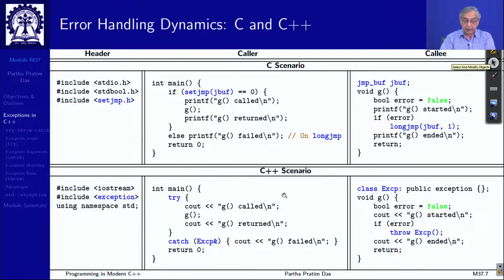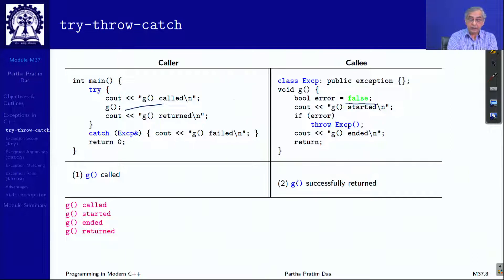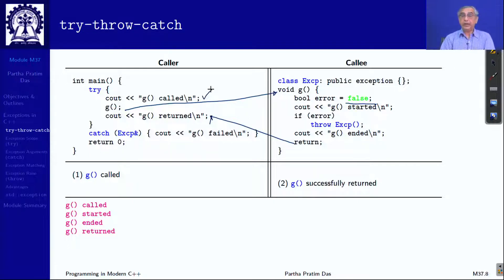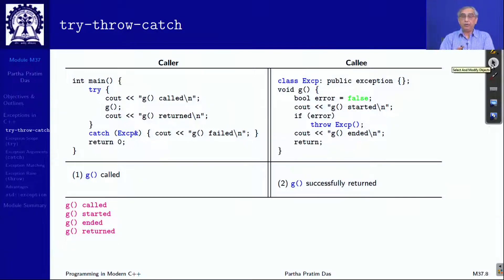With this, let us see what will happen in terms of try-throw-catch. If there is no error, it simply calls the function and returns to the next statement. So you will see: called, started, ended, and returned — g is called and successfully returned. There is no surprise, no difference in terms of the normal code that you see.